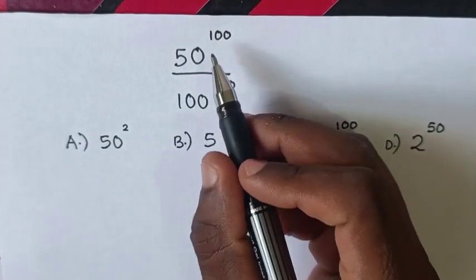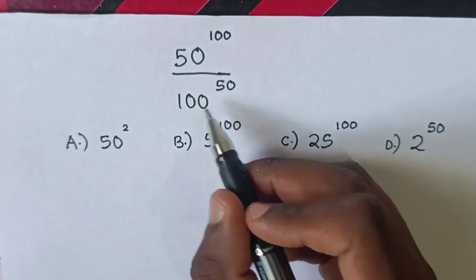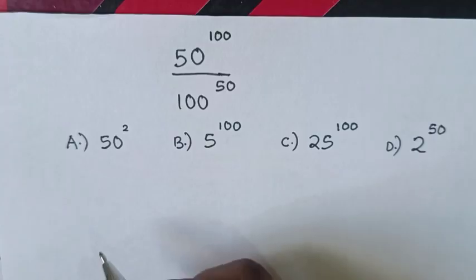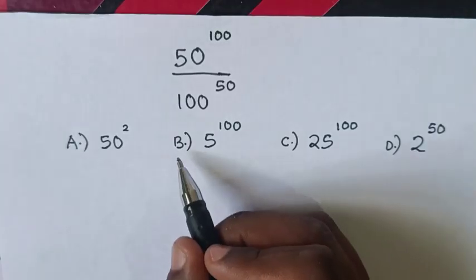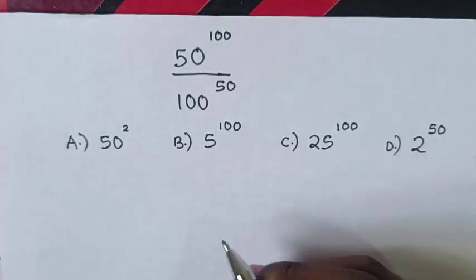Hello, how to solve 50^100 over 100^50 to choose between answers A, B, C, or D.